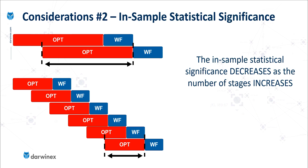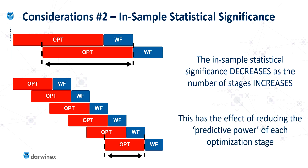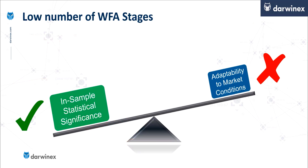But the second consideration is that of the statistical significance of each of the in-sample optimizations. Here, the opposite applies — as the number of stages increases, this has the effect of decreasing the statistical significance, and so in turn, reducing the predictive power of each of the optimization stages. So this is where we have the dilemma. For low numbers of stages, the in-sample statistical significance is high, meaning we've got good predictive power. However, we can't be very adaptable to market conditions as they change, which of course is a disadvantage.